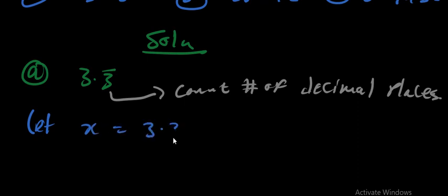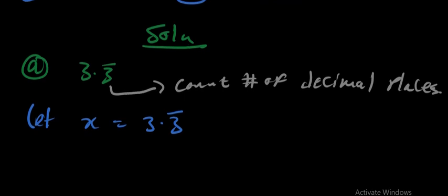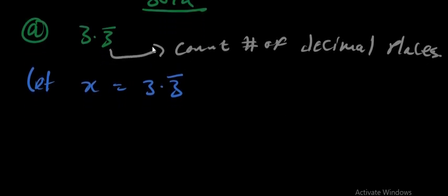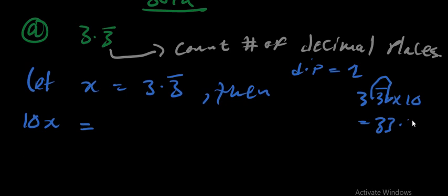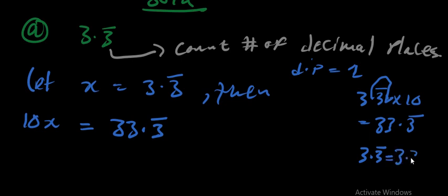Let X be equal to 3.3̄. We counted the number of decimal places — DP is 1 — so we multiply by 10. Then 10X is equal to 33.3̄, because when we multiply 3.3̄ by 10, the decimal point moves one step. A number written as 3.3̄ is the same as 3.3333... where the threes repeat to infinity.